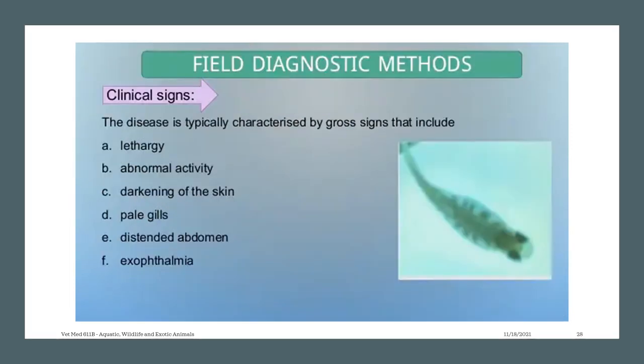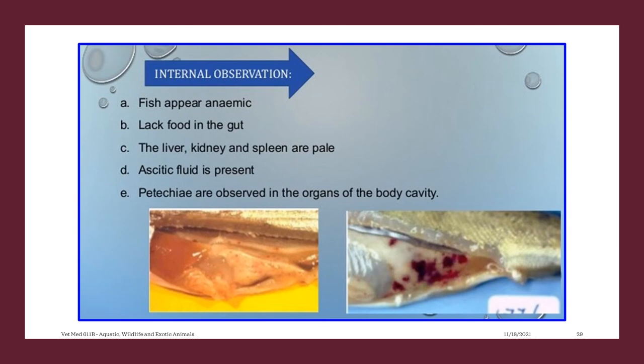For the clinical signs, the disease is typically characterized by gross signs including abnormal activity, darkening of the skin, pale gills, distended abdomen, and exophthalmia. For the internal observation, the fish appears anemic, there is a lack of food in the gut, and the liver, kidney, and spleen are pale. There is also the presence of ascitic fluid, and petechiae are observed in the organs of the body cavity. The liver, spleen, and kidney are swollen with a milky white fluid.